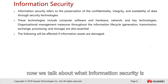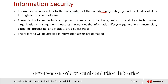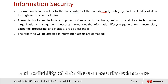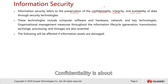Now we understand what information is, so let's talk about what is information security. Information security refers to the preservation of confidentiality, integrity, and availability of data through security technologies. These are the key keywords — you can see this forms something like CIA: C stands for confidentiality, I for integrity, and A for availability.